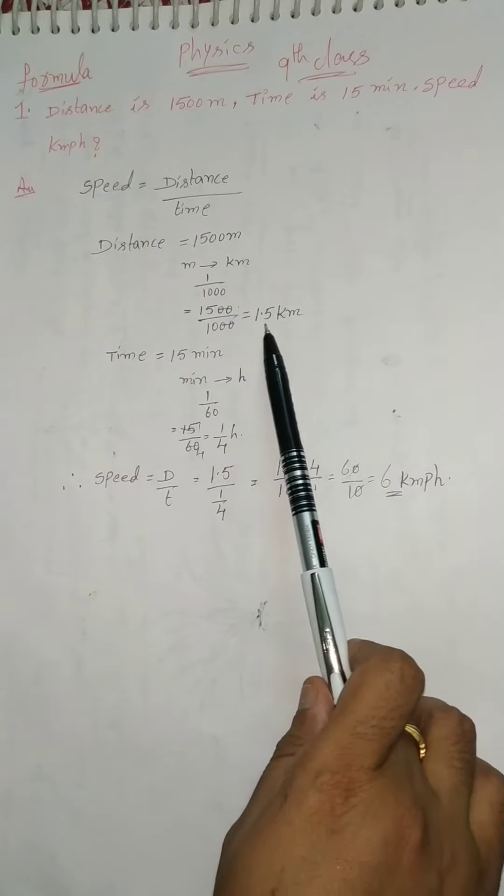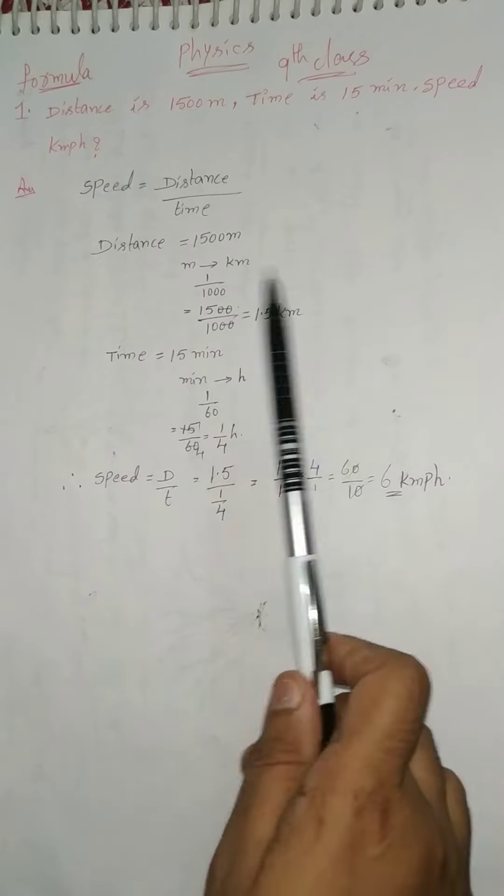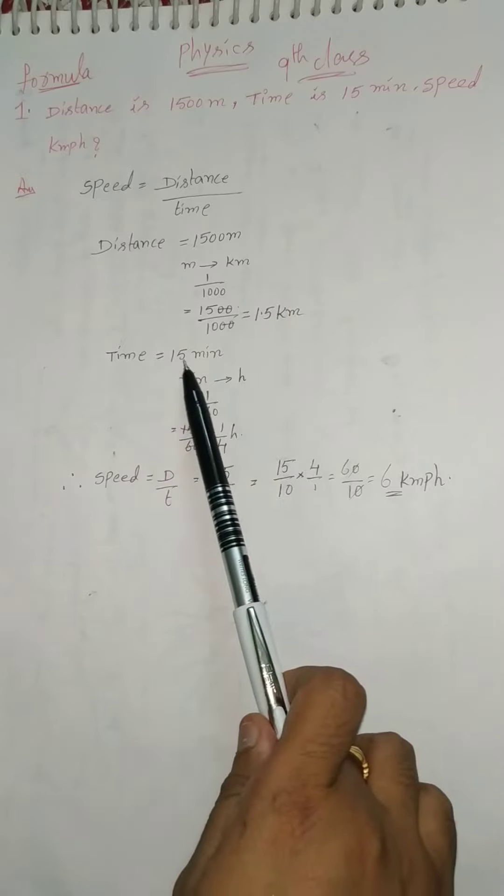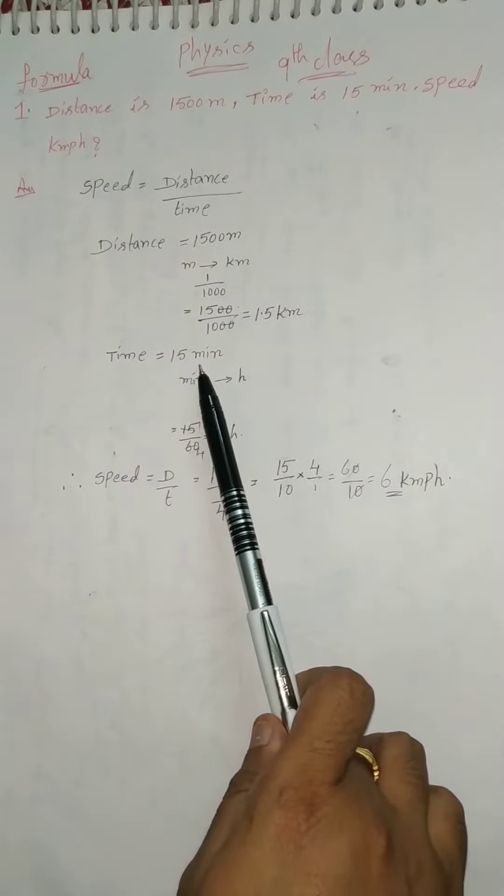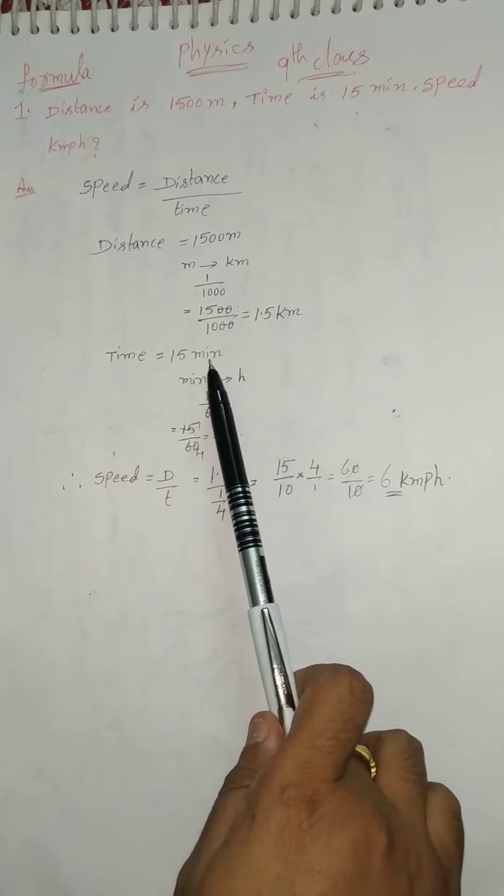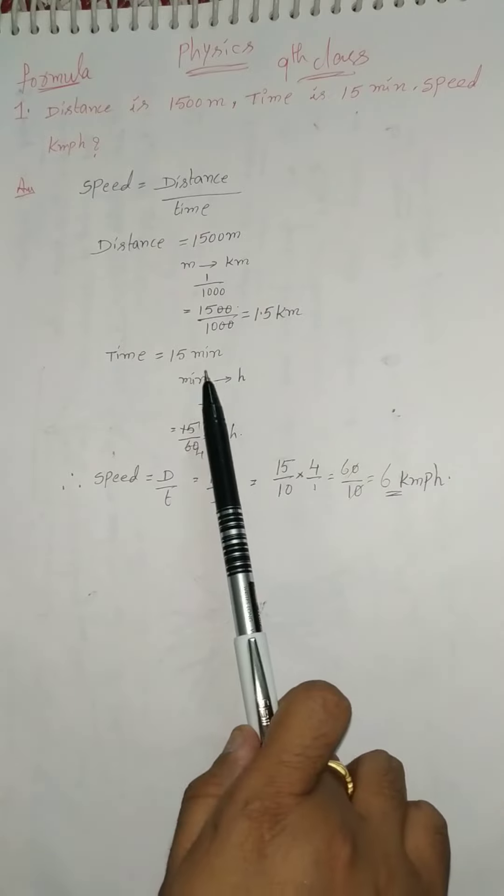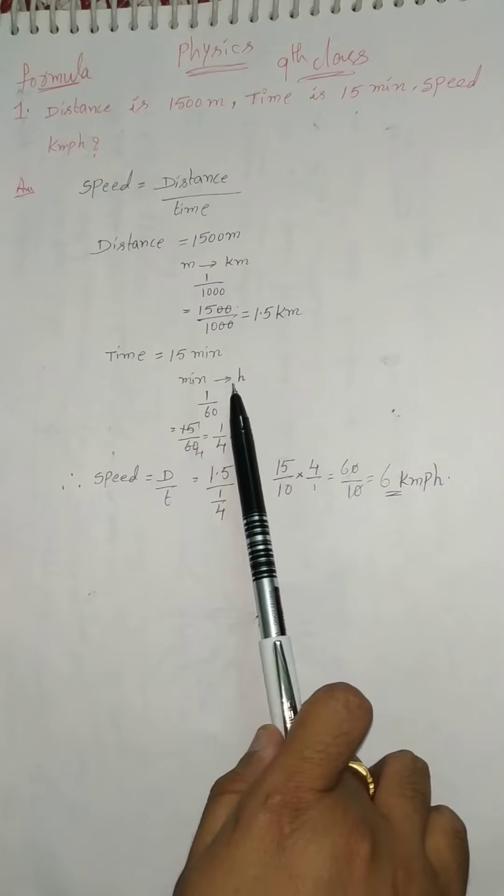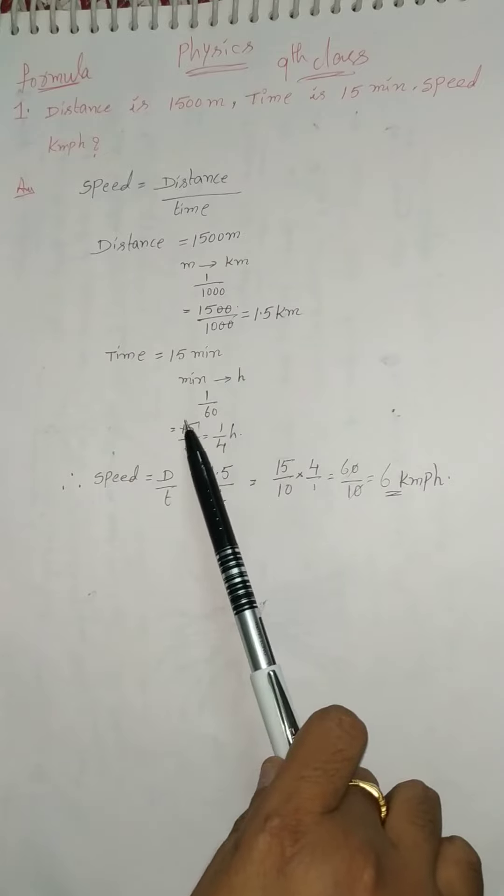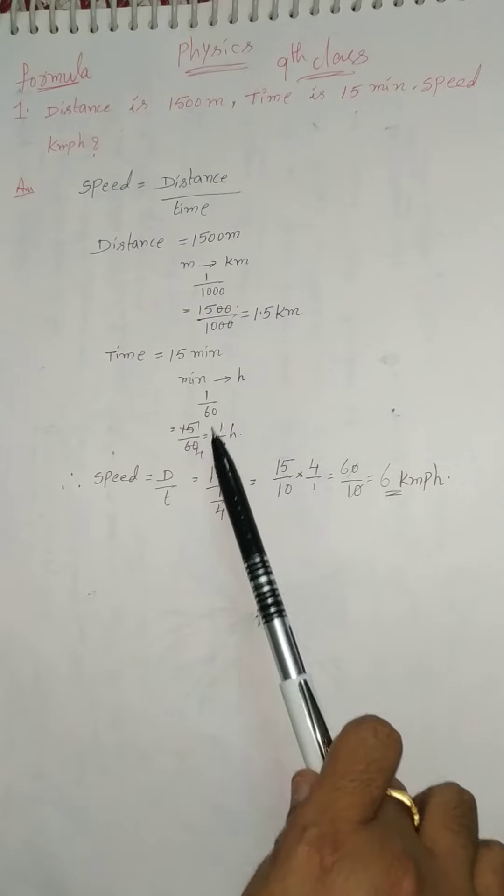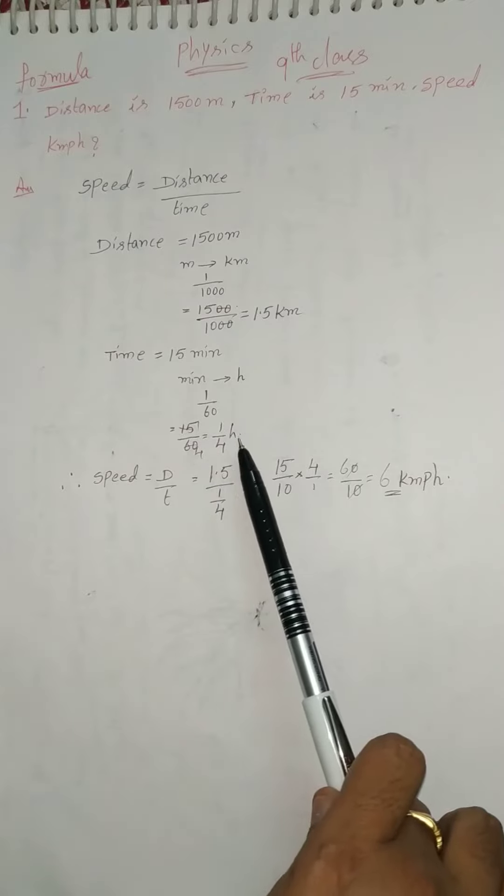Next one, time equals 15 minutes. They give the units as 15 minutes but we want in hours. So minutes change into hours, we divide by 60. So 15 by 60 means 15 ones are 15, fours are... so 1 by 4 hour.